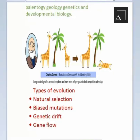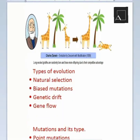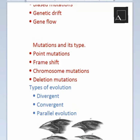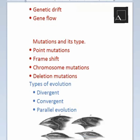Types of evolution include natural selection, biased mutation, genetic drift, and gene flow. Mutation types include point mutation, frameshift mutation, chromosomal mutation, and deletion mutation. Types of evolution patterns include divergent, convergent, and parallel evolution.